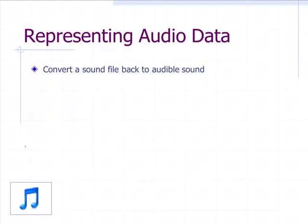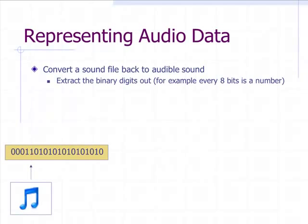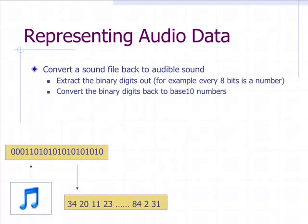Next, to convert the sound back into an audible sound, we take the MP3 file, we extract all the binary information out of it. And so for example, for every eight bits, we say that's a number. And then we take that binary information and we convert it back into base 10.